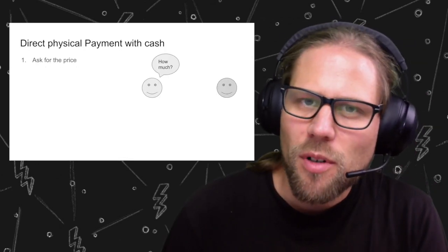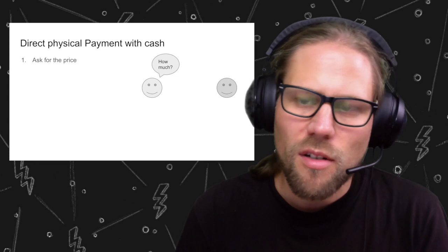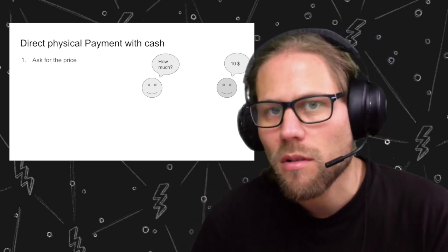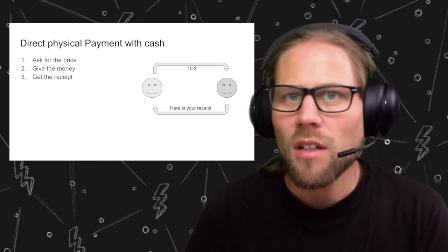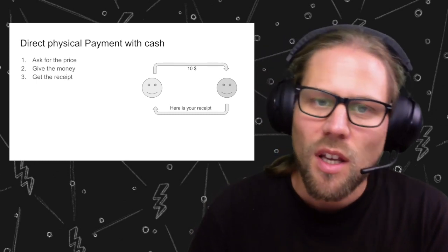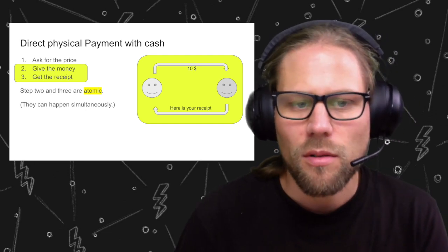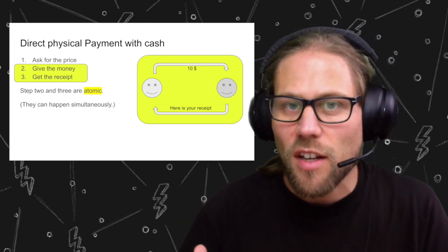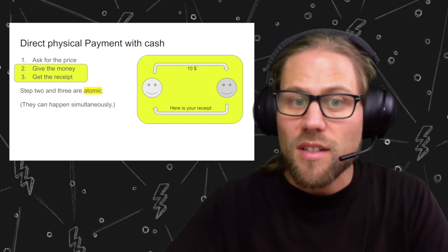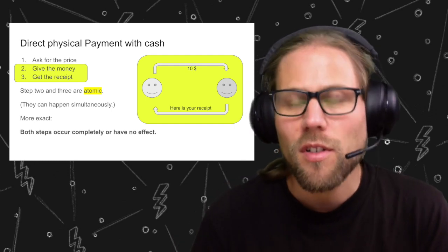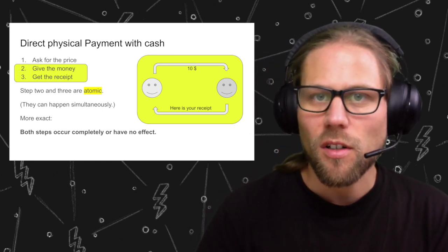To understand the payment process and HTLCs, we start with a real-world comparison. You go to somebody, ask for a price, and get the response: it's $10. You then give the money and receive something back — the good, the receipt, or a proof of payment. The idea is that this entire process should be atomic: both steps occur completely or have no effect at all. You don't want the situation where you give the $10 but get nothing back.